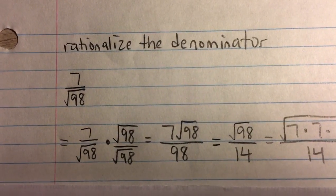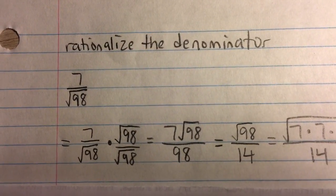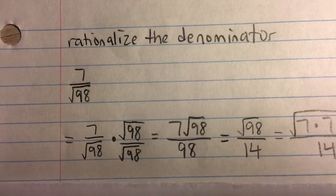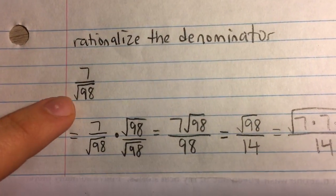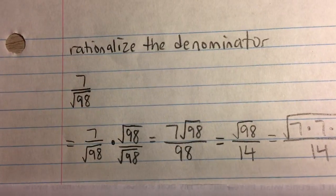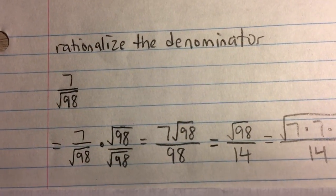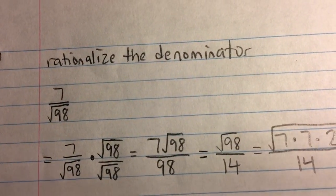Rationalize the denominator of 7 over the square root of 98. Now first off, by rationalize the denominator, it means we have to get rid of any square roots in the denominator because we know square roots are irrational and we're trying to make it rational.